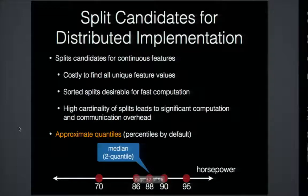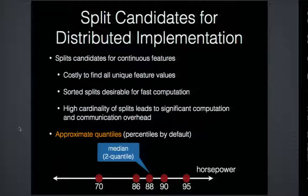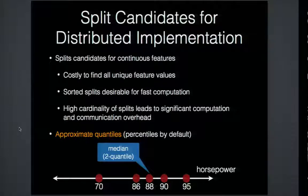In order to do a distributed implementation, we had to make one approximation. As seen in the toy example, we chose every feature value as a split candidate for continuous features. However, it's costly to find these in a distributed setting, and we normally want these values sorted to help with computation. High cardinality of splits would lead to significant computation and communication overhead. So instead of using all unique feature values, we use approximate quantiles — a standard trade-off to gain performance improvements without significant loss in accuracy, also cited in the PLANET paper.